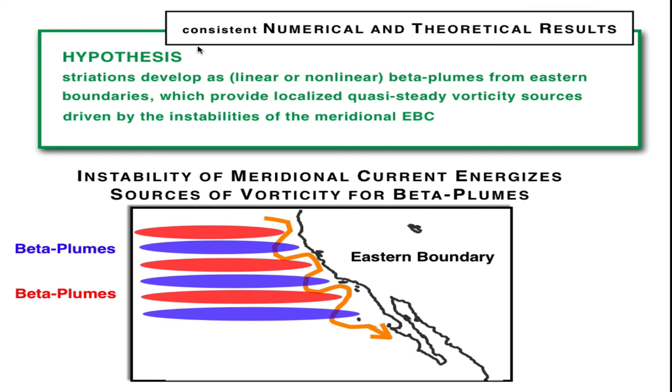In conclusion, I think that our hypothesis that striations develop as linear or nonlinear beta plumes from eastern boundaries, which provide the localized quasi-steady vorticity sources that are driven by the instability of the meridional eastern boundary current, this hypothesis seemed to be consistent both with numerical and theoretical results. Thank you very much.